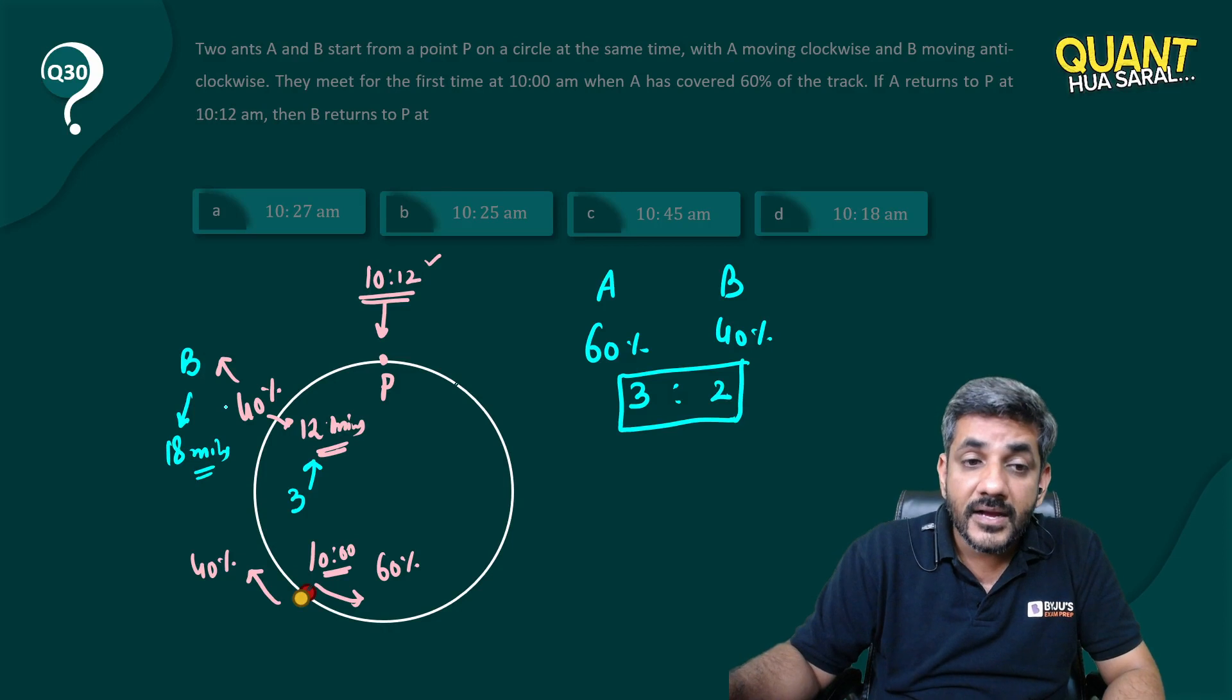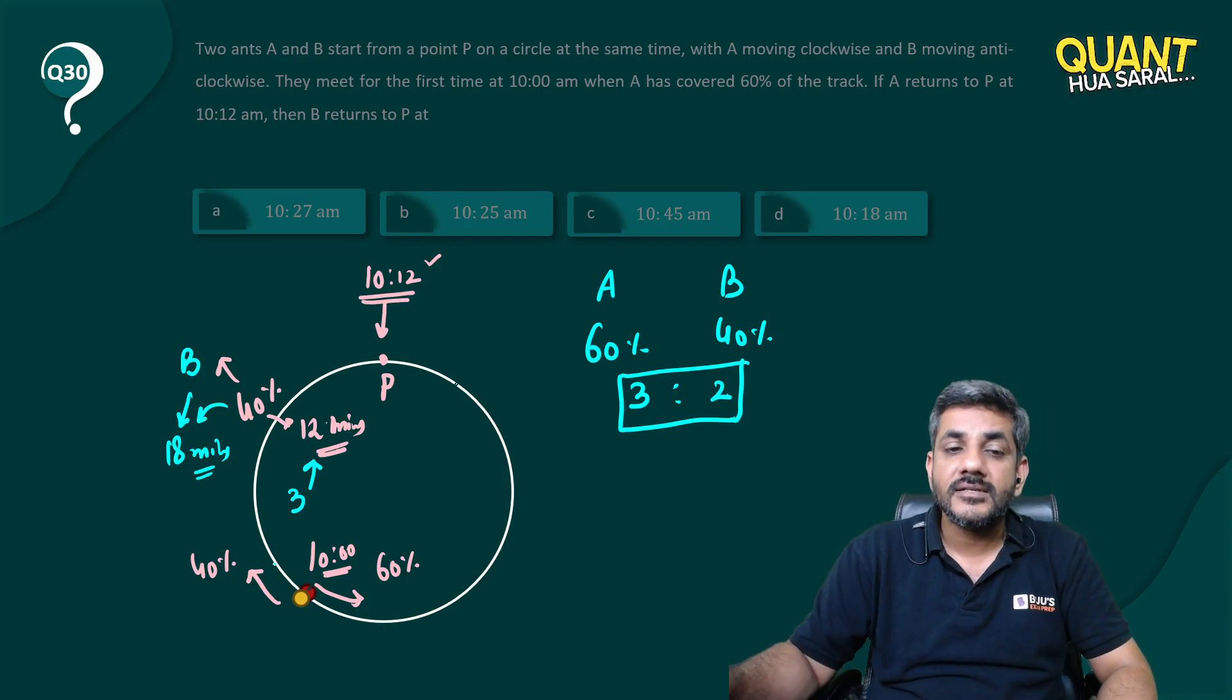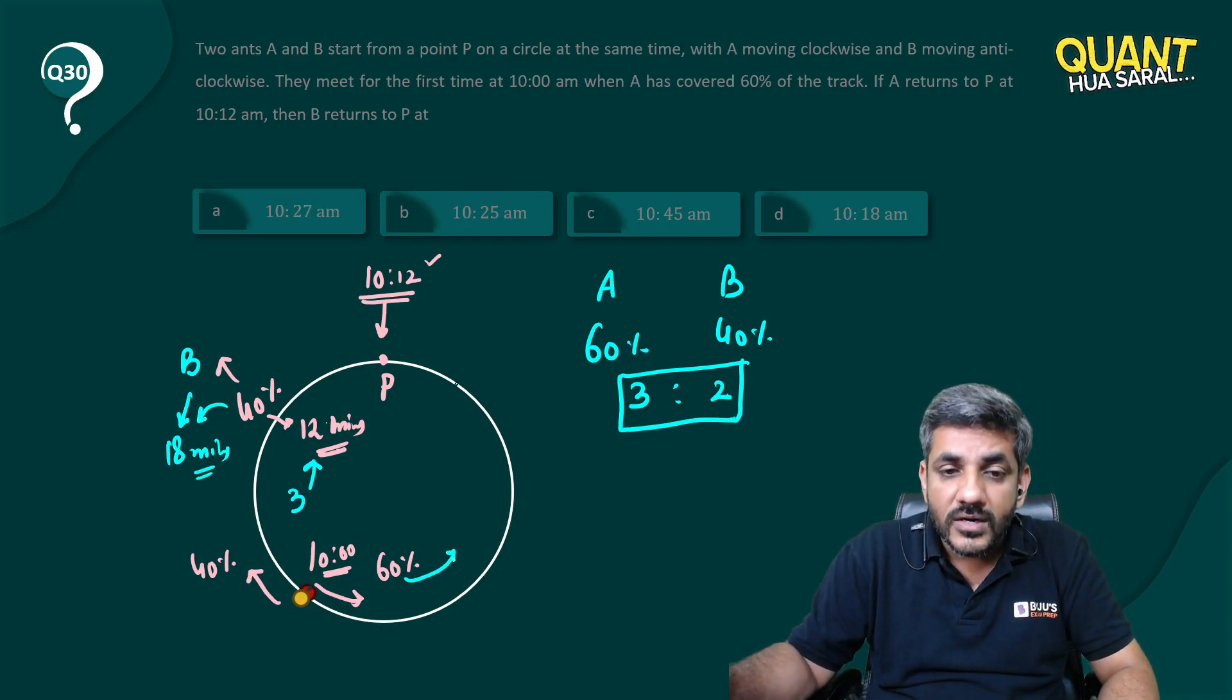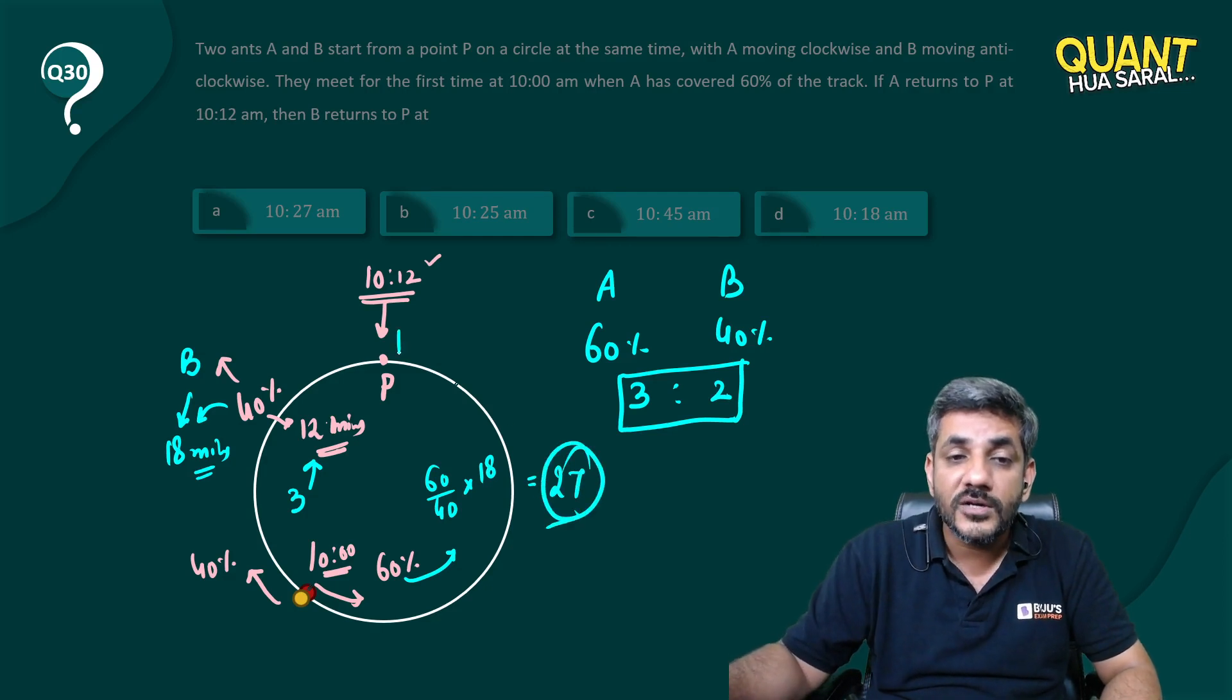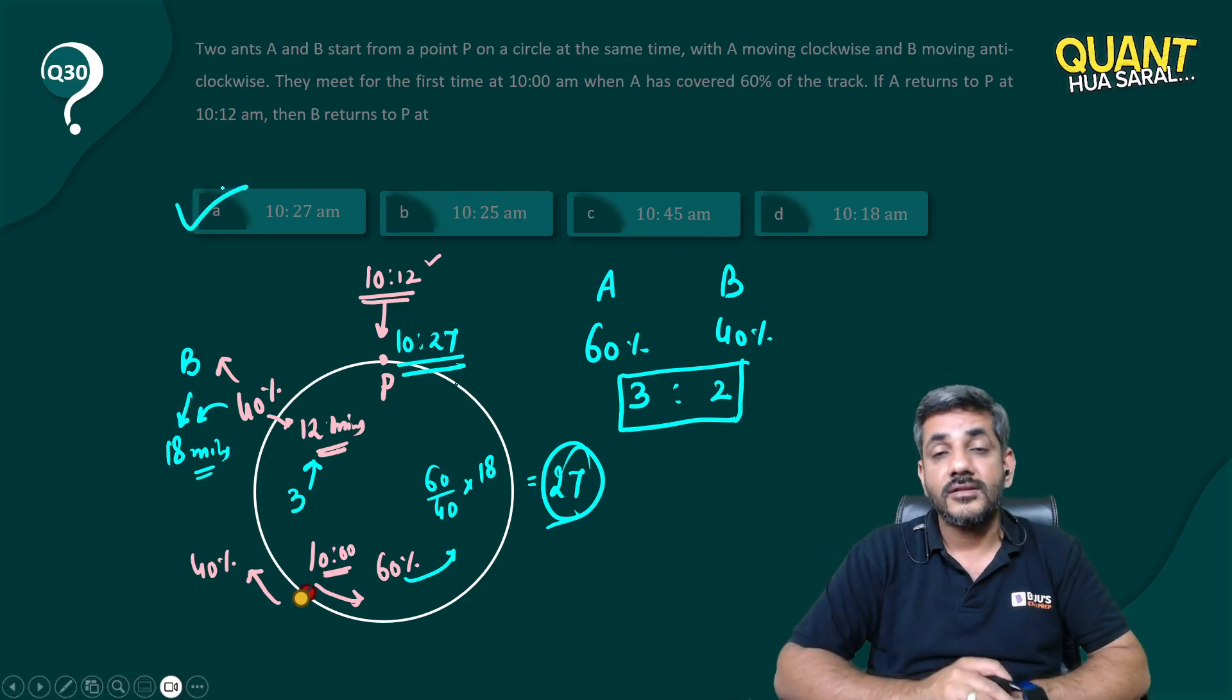If ant B covered 40% in 18 minutes, in what time is ant B going to cover this 60%? It is going to cover 60% in 60 by 40 into 18 minutes, and that gives me 27 minutes. So ant B is going to reach here at 10:27. That's the right answer for this question.